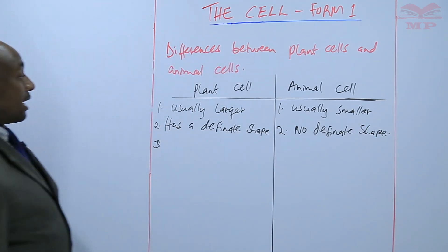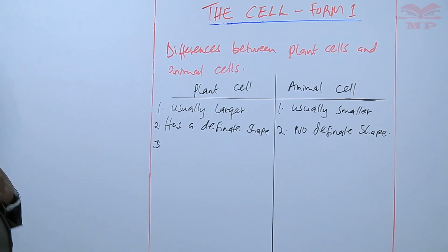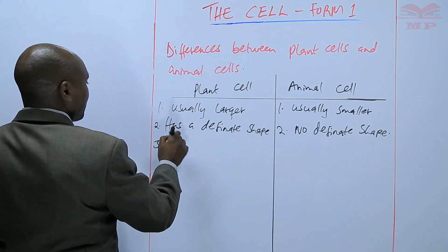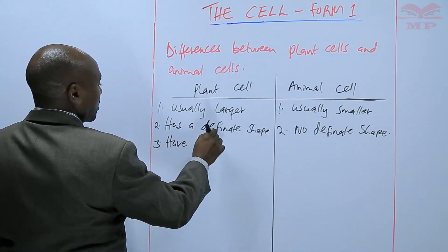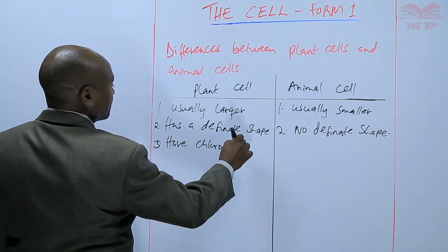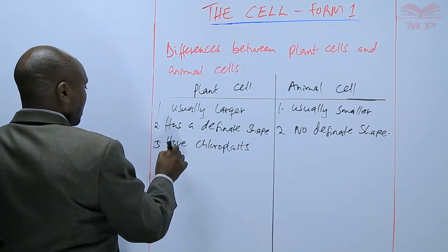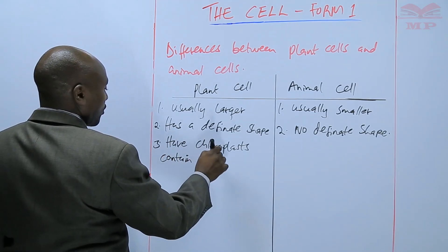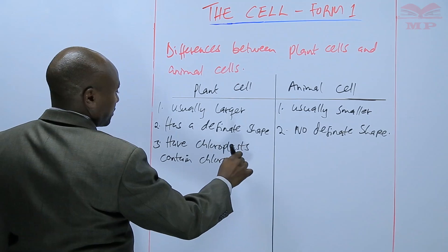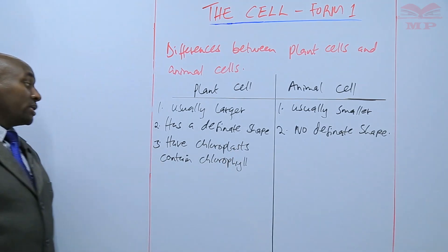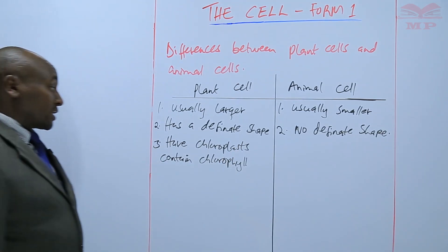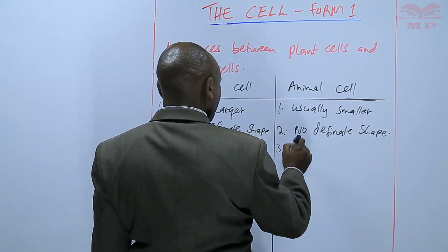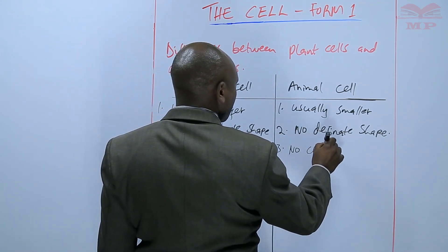Another very fundamental difference is that plant cells have chloroplasts that contain chlorophyll, and that is the chlorophyll that is used for photosynthesis. Animal cells have no chloroplasts.